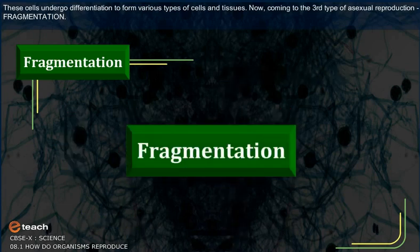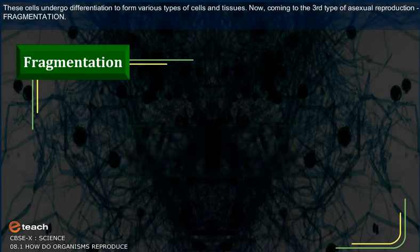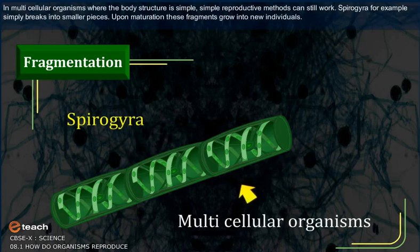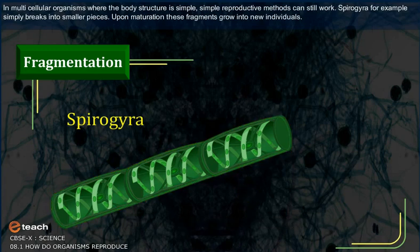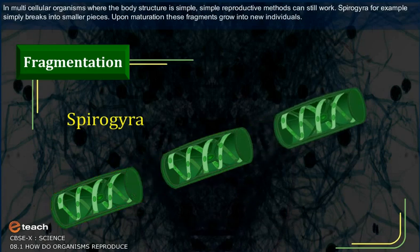The third type of asexual reproduction is fragmentation. In multicellular organisms where the body structure is simple, simple reproductive methods can still work. Spirogyra, for example, simply breaks into smaller pieces upon maturation, and these fragments grow into new individuals.